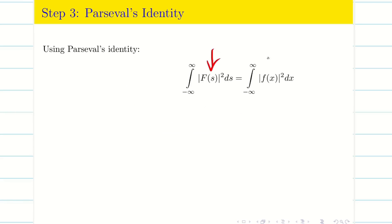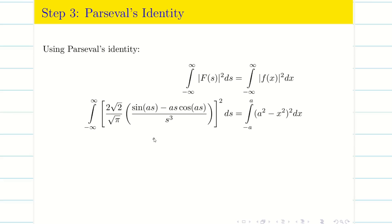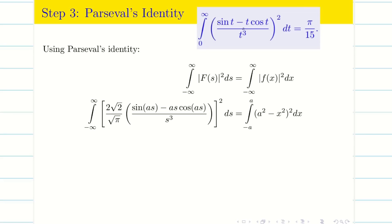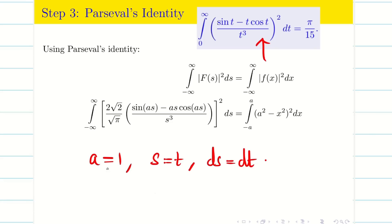Substituting F(s) and f(x) on both sides of Parseval's identity, we set a = 1 and s = t, ds = dt to match the target form, which is ∫(sin t - t·cos t)²/t⁶ dt = π/15. Simplifying the left side: squaring the coefficient (2/√π·1/s³)² gives 4/π times 1/s⁶, yielding an overall factor of 8/π.